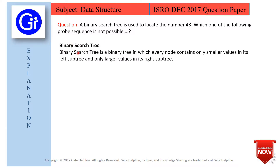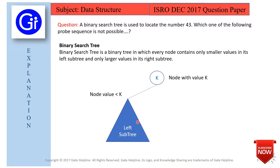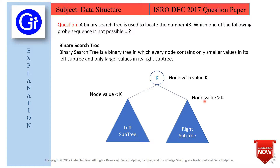First of all, we will see what is a binary search tree. A binary search tree is a binary tree in which every node contains only smaller values in its left subtree and only larger values in its right subtree. We can see this with the help of a diagram: the root node has value k, the left subtree has node values less than k, and the right subtree has node values greater than k. This is the definition of a binary search tree.